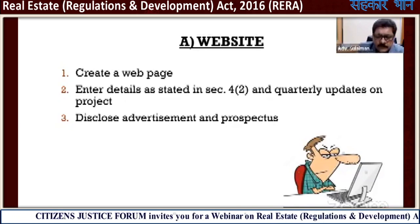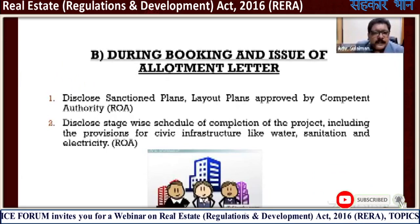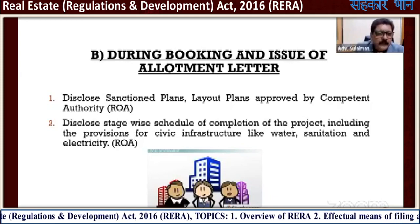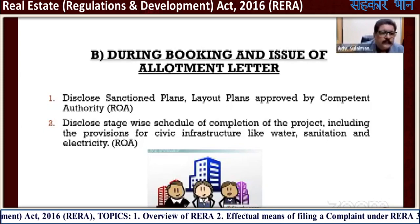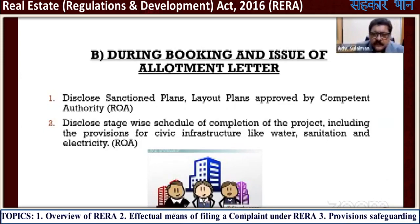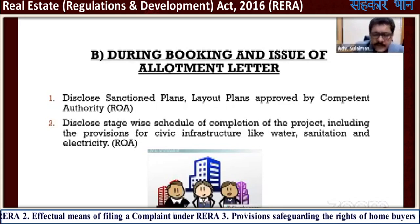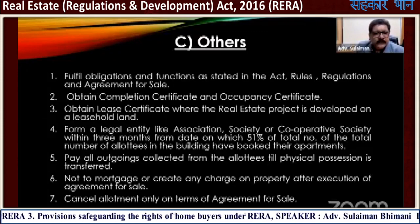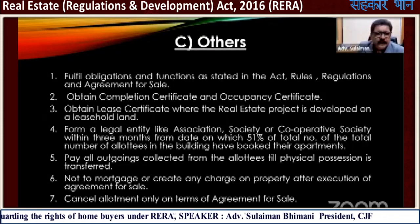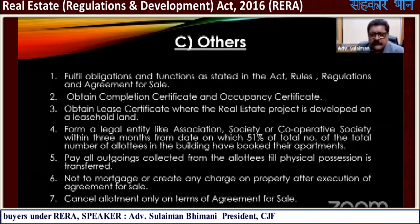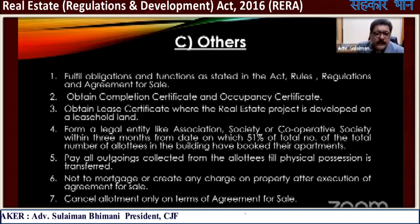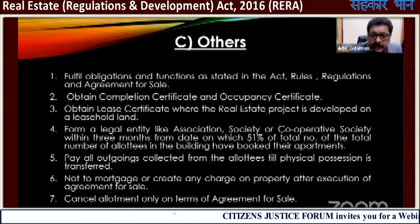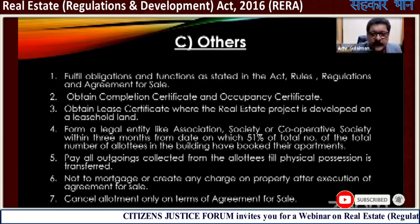During booking and issue of the allotment letter, the builder must disclose the advertisement and prospectus, sanction plans and layout plans approved by the competent authority, a statewide schedule of completion of the project, and provisions of civic infrastructure like water, sanitation, and electricity. He must also fulfill obligations as stated in the act, obtain completion certificate and occupation certificate, and form a legal entity like an association, society, or cooperative society within three months from the date on which 51% of the total number of allottees in the building have booked their apartments.